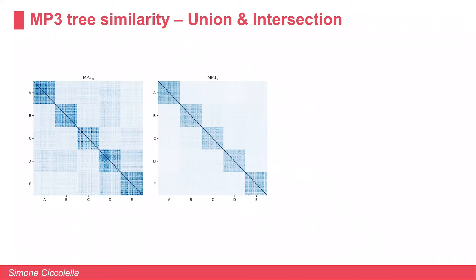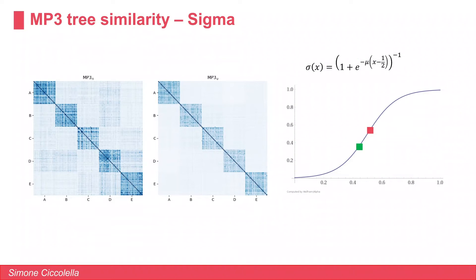Our main goal was to define one single measure that provides insightful information about two phylogenies. We can see that MP3-intersection captures more similarity within the same group but tends to have more noise, while MP3-union discriminates more between groups but has a lower resolution within the same group.